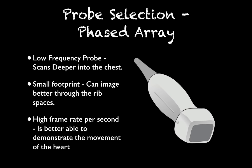We're going to use what's called a phased array probe. This is a low-frequency probe with a very small footprint that lets us look between the ribs. It essentially functions like a high-frame-per-second camera — it doesn't give quite as good a still image quality, but it gives a pretty good image, especially when something's moving like the heart.